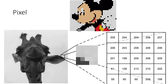In digital imaging, a pixel, or picture element, is the smallest addressable element in an all-points addressable on-display device, and it is the smallest controllable element of a picture represented on the screen. In general, when you keep on zooming the image on any digital device, you will eventually end up seeing pixels.